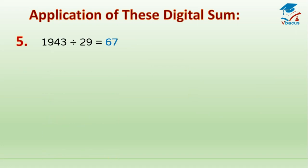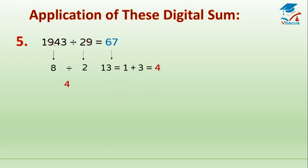Now for division: 1,943 divided by 29 equals 67. Digital sum of 1,943: cancel 9, so 1 plus 4 plus 3 equals 8. Digital sum of divisor 29: cancel 9, leaving 2. So 8 divided by 2 equals 4. Check from the answer: 6 plus 7 equals 13, and 1 plus 3 equals 4. This answer is correct, cross-verified by digital sum.